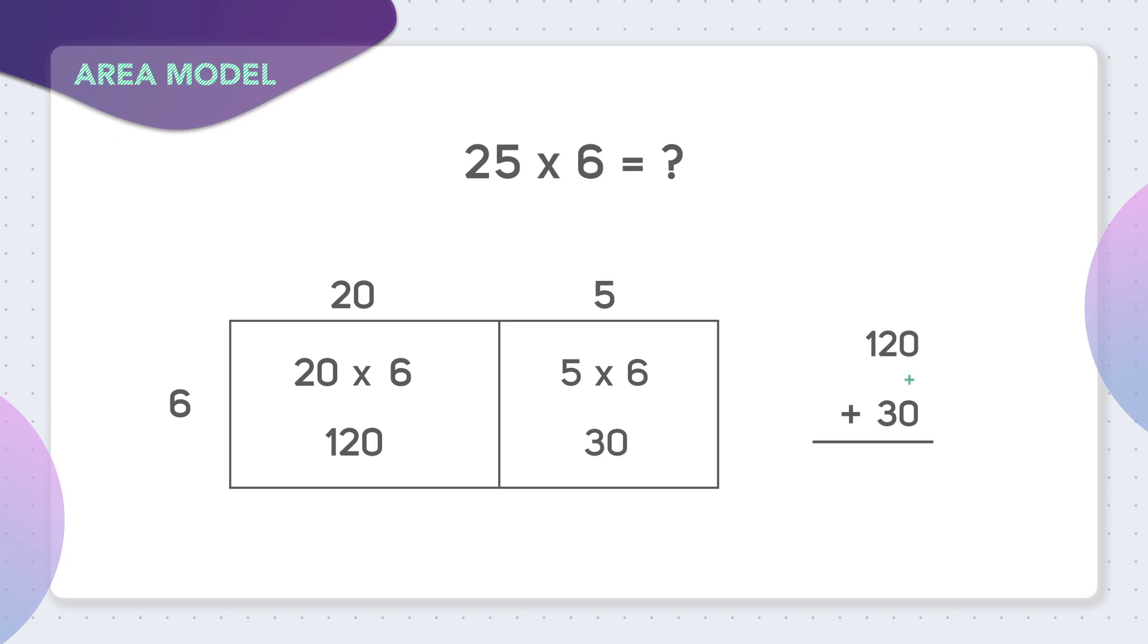When we solve this, 0 plus 0 is 0, 2 plus 3 is 5, and just this 1 is 1. So the answer to our problem 25 times 6 is 150.